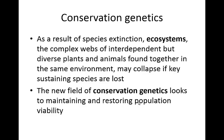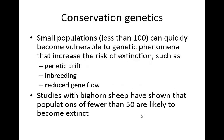The field of conservation genetics looks towards maintaining and restoring population viability of all different types of organisms. If you have very small populations — less than 100 of a different type of individual — they can quickly become vulnerable to genetic phenomena that increase the rate of extinction, things like genetic drift, inbreeding, or reduced gene flow. Studies on bighorn sheep have shown that populations of fewer than 50 are pretty likely to become extinct — that's just not enough to sustain the population.